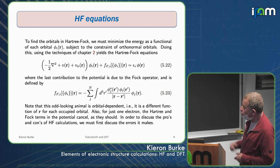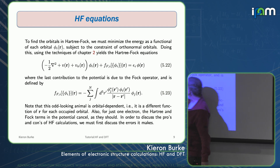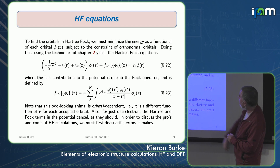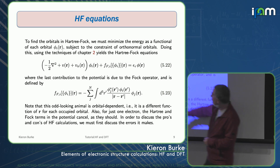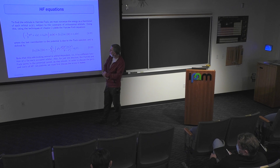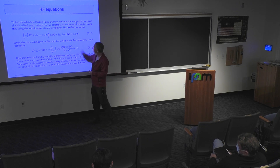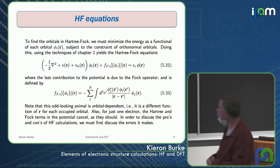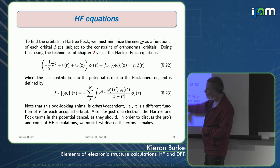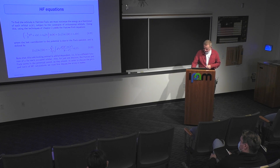If you ask what set of orbitals minimizes the energy, you get the Hartree-Fock equations. They're self-consistent because the Hartree and exchange terms depend on the orbitals themselves, and the exchange operator is orbital-dependent. Because it depends on the orbitals, you make an initial guess, calculate the potentials, solve to get new orbitals — often mixing them with the old ones — and step and step until you have convergence, usually in terms of how the orbitals are changing and whether the energy has settled down.